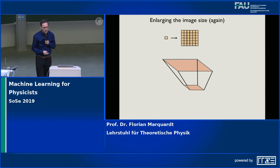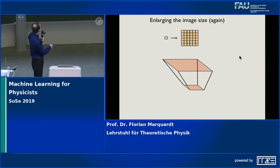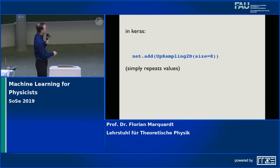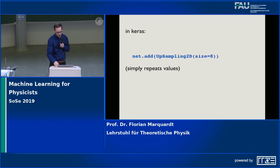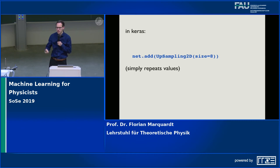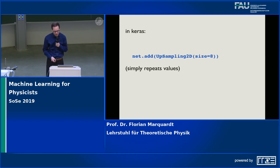For some applications you might even want to enlarge the image — take one pixel and turn it into many. This is possible with upsampling2D in Keras: you give it the size, for example an original pixel turns into an 8 by 8 grid, and it simply repeats the values. So if the pixel was value 0.7, it puts 0.7 in that entire 8 by 8 grid.